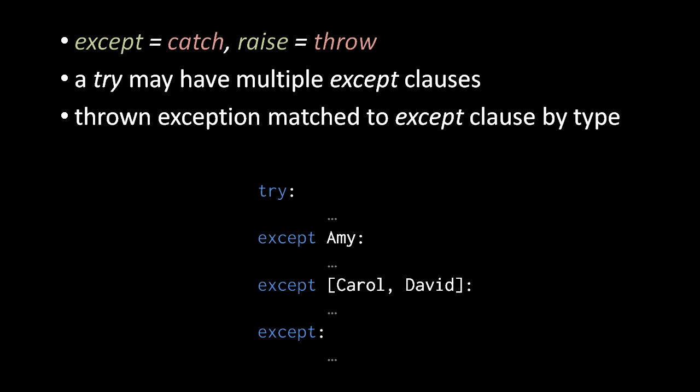If in the try block an exception is thrown, Python tests whether or not that exception is considered an instance of the Amy class. It must either be an instance of the Amy class directly, or it must be an instance of a descendant of Amy. And if that test proves true, if the exception is an instance of the Amy class, then that first except clause is the one that runs.